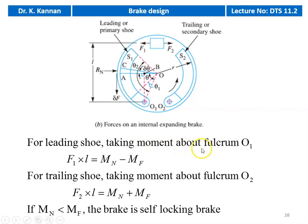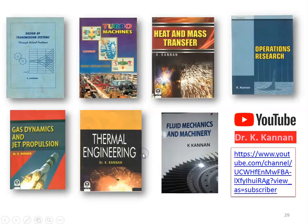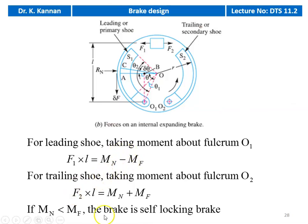The braking torque equals mu × P1 × B × R² × (cos(theta1) − cos(theta2)). The moment of the normal force Mn = (1/2) × B × P1 × R × OO1 × (theta2 − theta1) + (1/2)(sin(2*theta1) − sin(2*theta2)). The moment of the frictional force Mf = mu × P1 × B × R × [R(cos(theta1) − cos(theta2)) + (OO1/4)(cos(2*theta2) − cos(2*theta1))]. For the leading shoe, taking moments about fulcrum O1: F1 × L = Mn − Mf. For the trailing shoe, F2 × L = Mn + Mf. If Mn is less than Mf, the brake is self-locking. Using these equations, we can calculate F1 and F2, and then the force required to actuate the brake.